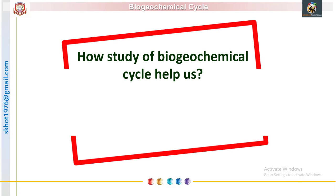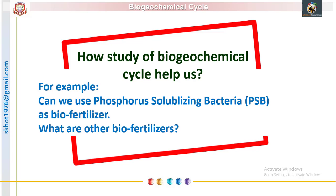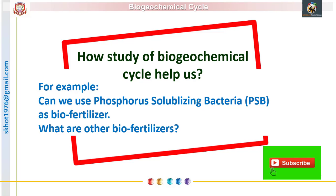Let us see how the study of biogeochemical cycles helps us. We can take the example of phosphorus-solubilizing bacteria. In the phosphorus cycle, phosphate is immobilized in the form of salts, but it can be recycled and converted into a water-soluble form by phosphate-solubilizing bacteria. With this knowledge from biogeochemical cycles, we can use PSB as a biofertilizer. Now, which are the other biofertilizers? Write their names in the comment section below.